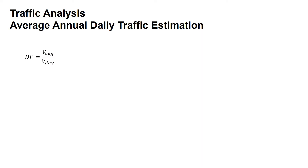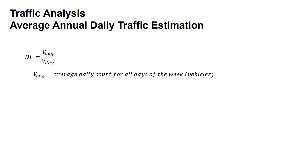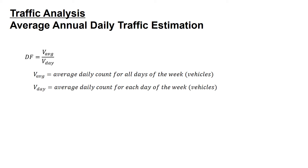DF is equal to V sub average divided by V sub day. V sub average is the average daily count for all days of the week, in vehicles. V sub day is the average daily count for each day of the week, also in vehicles.